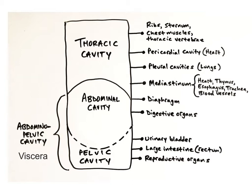The mediastinum contains the heart, thymus, esophagus, trachea, and several of the heart's large blood vessels. An important anatomical landmark is the diaphragm. The diaphragm is a large, dome-shaped skeletal muscle used in respiration that separates the thoracic cavity from the abdominopelvic cavity.